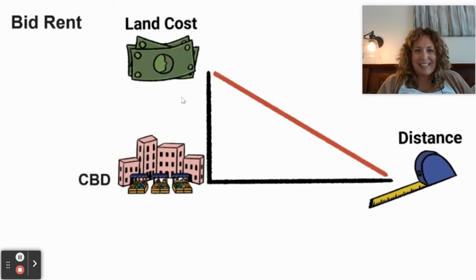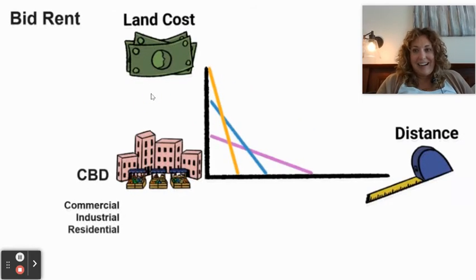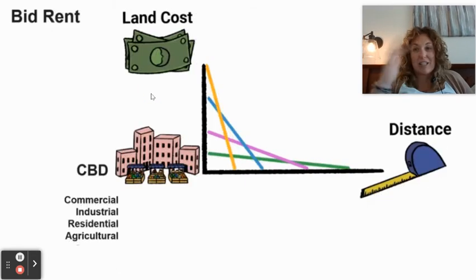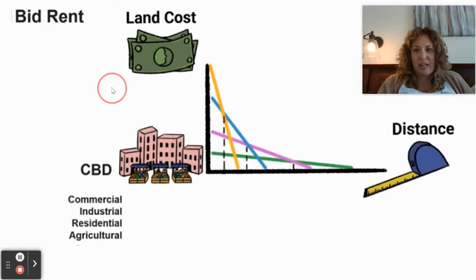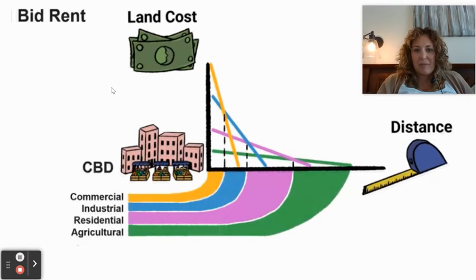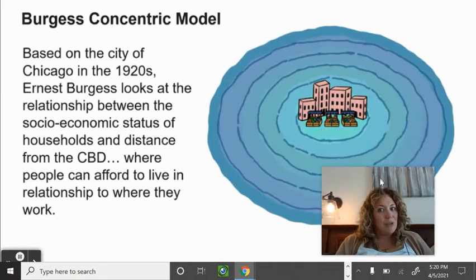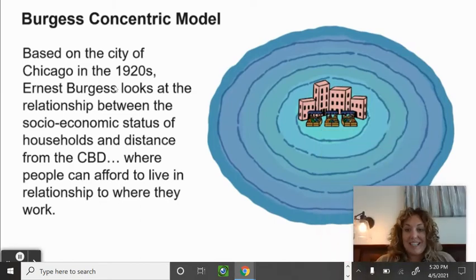People who live close to downtown pay a premium compared to living further out. You can see how this changes over time, and you can click through the slideshow on Schoology at your own pace. The rings look a lot like the von Thünen model.